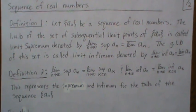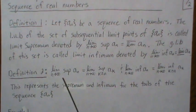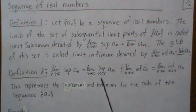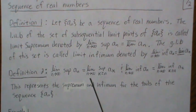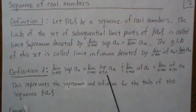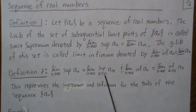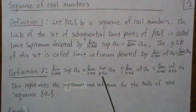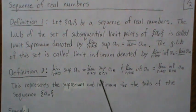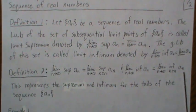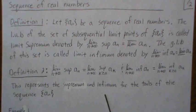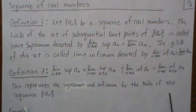An equivalent definition is as follows. The limit as n goes to infinity of the supremum of AN can be thought of this way: for each n, we find the supremum of our sequence for all terms greater than n — that is, the tail — and then take the limit of those suprema. That's what this means, and it's called our limit supremum. Similarly, the limit infimum of AN is the infimum of the sequence over the tail, and then the limit of that. This represents the supremum and infimum for the tails of our sequence AN.